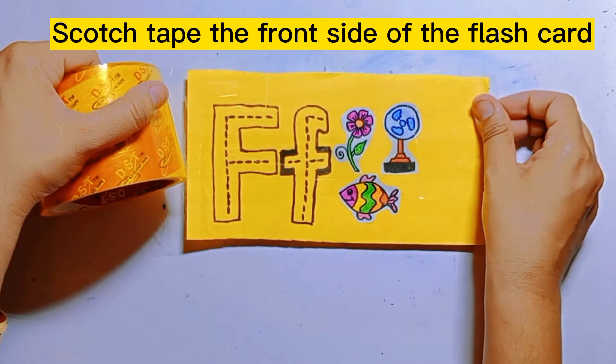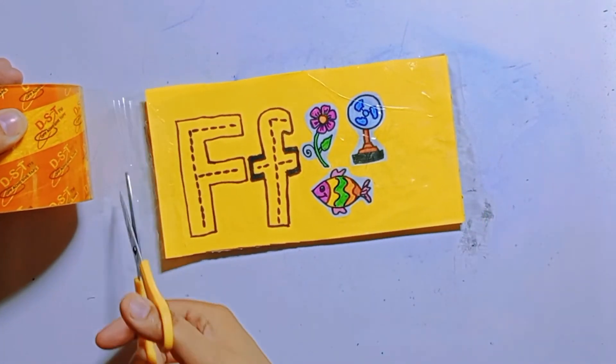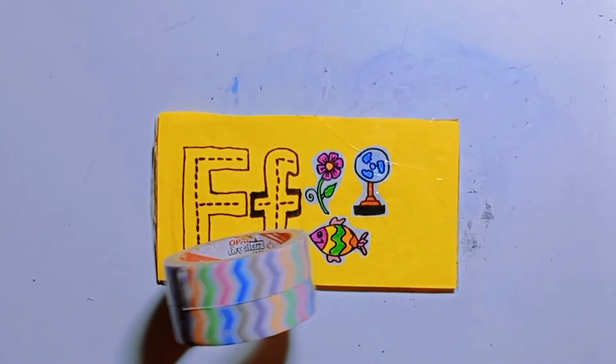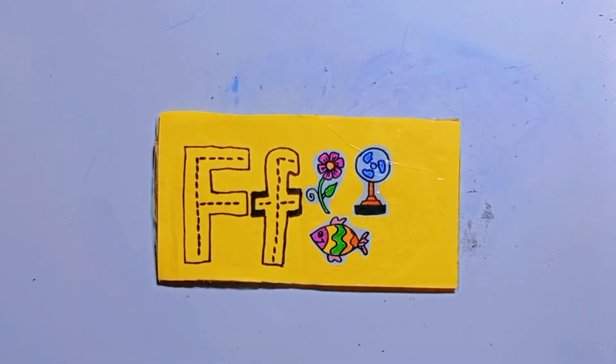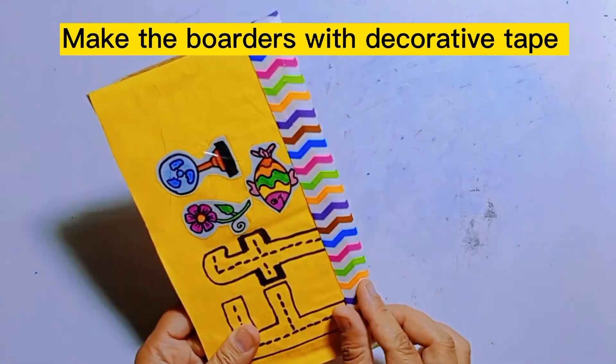Scotch tape the front side of the flash card. Make the borders with decorative tape.